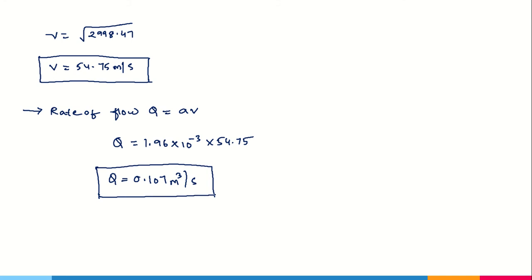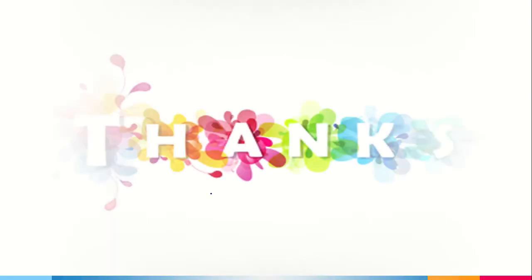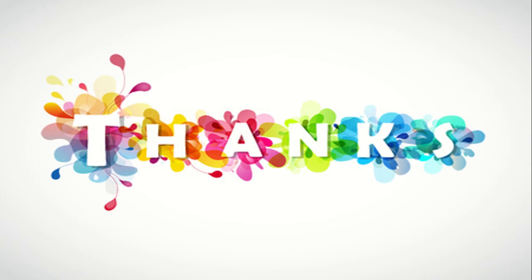If you want to convert the discharge into liters per second, simply multiply by 1000, giving approximately 107 liters per second. This is how you solve for the stationary inclined case. Hope you understood the video — thanks for watching.